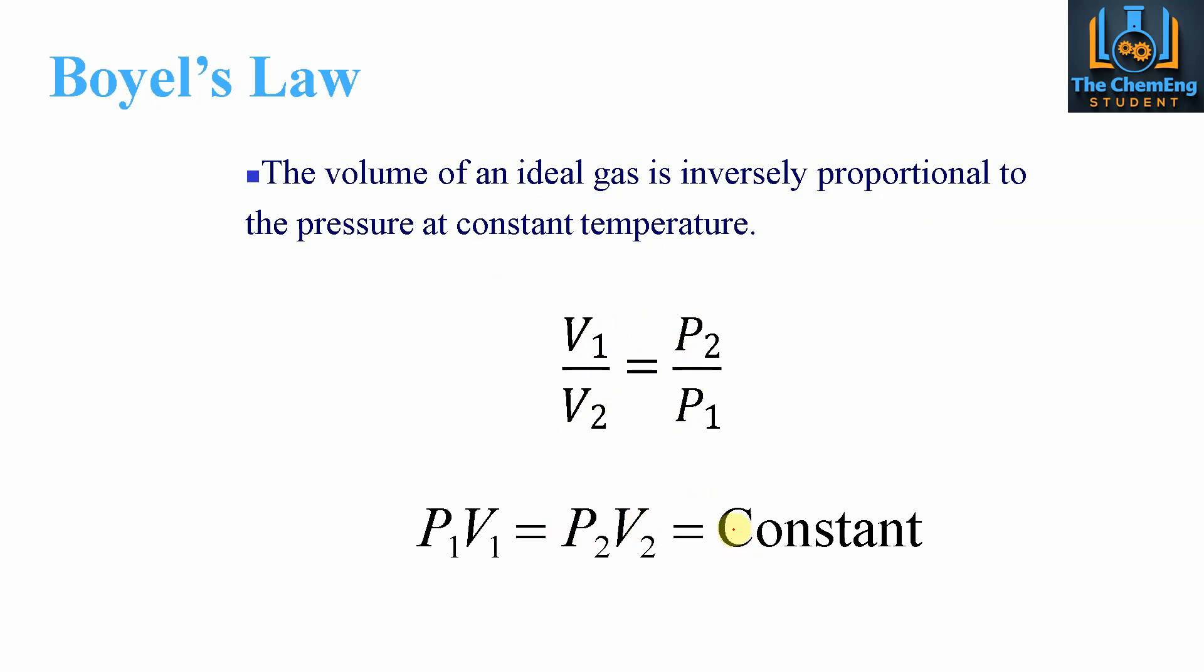So where this becomes useful is if we fix the temperature of our system, if we know the properties at state 1, and we know the pressure at state 2, we can then calculate the value of V2. And that's where these equations of state can be very useful. If we fix one of the variables, we can therefore find the unknown values.